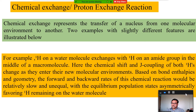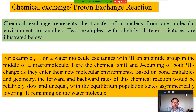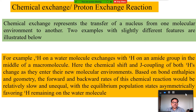For example, hydrogen on a water molecule exchanges with a proton on the amide group in the middle of a macromolecule. Here, the chemical shift and J coupling of both hydrogens change as they enter their new molecular environment. Based on bond enthalpies and geometry, the forward and backward rate of this chemical reaction would be relatively slow and unequal, with the equilibrium population state unsymmetrically favouring the proton remaining on the water molecules.